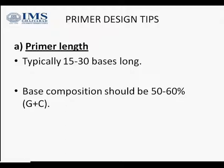Moreover, the base composition should be 50 to 60 percent GC content. This is because GC shows three hydrogen bonds, giving very stable bonding, so the base composition should be 50 to 60 percent GC content.